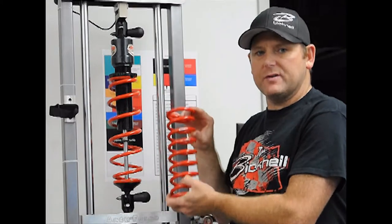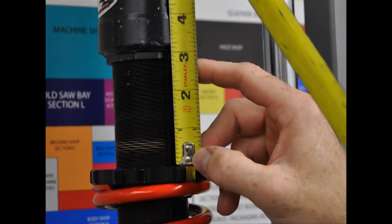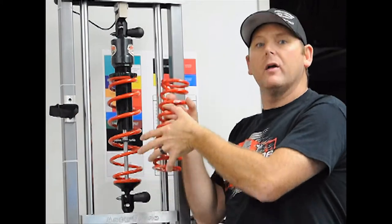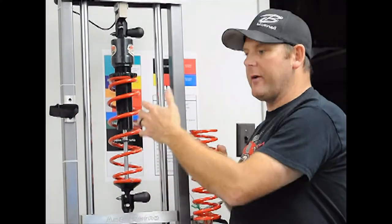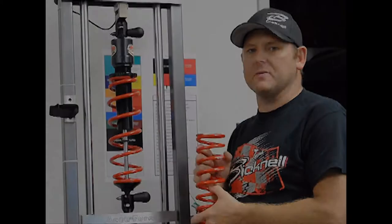At 2 inches, a 150 would double its rate so it would be at 300. Then at 3 inches, it takes 450 pounds to compress that spring 3 inches. Doesn't matter the length of the spring—you have a 14 inch, a 10 inch, a 12 inch—that is universal across the board.